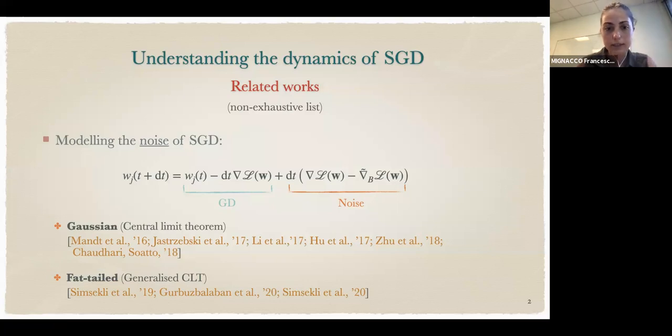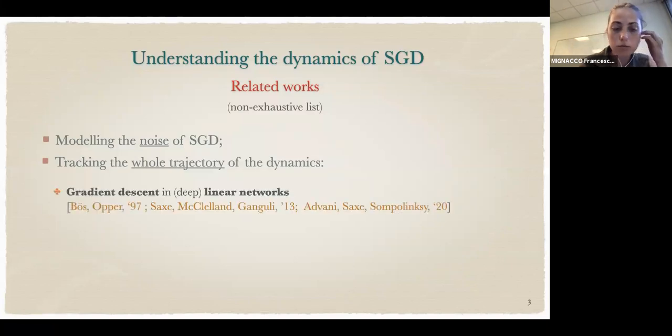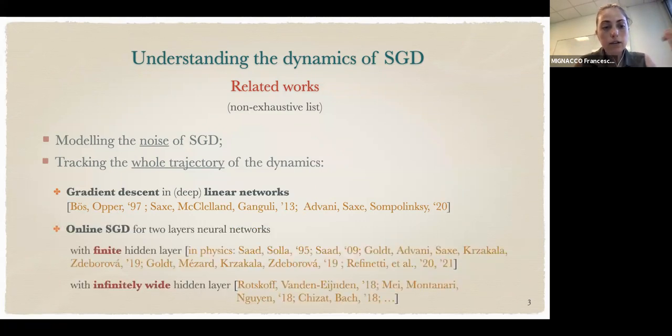More related to my talk is a series of other works that try to model the trajectory of the algorithm without resorting to approximation. This can be done but in some specific cases: for gradient descent in linear networks, or in the case of online SGD for two-layer neural networks, both with a finite number of hidden layers and in the case of an infinitely wide hidden layer.